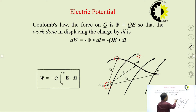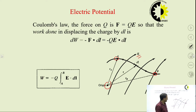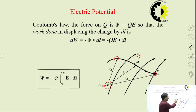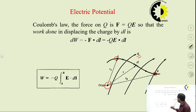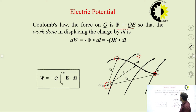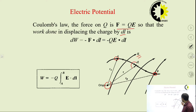Suppose we have a point A at which we are standing, and now we are moving from point A to point B. The total distance is from A to B. Electric potential is nothing but the work done by moving from point A to point B by the point charge. This is based on Coulomb's law where the force on Q is F = Q·E. The work done in displacing the charge by distance DL — we have assumed this is our DL distance — so work done equals F·DL.